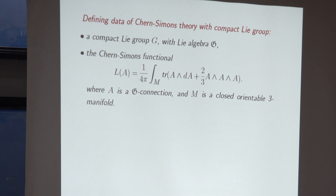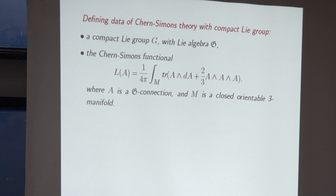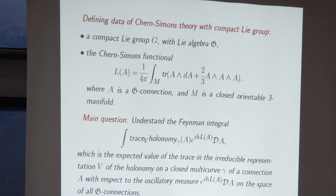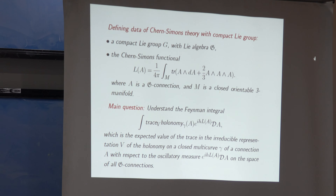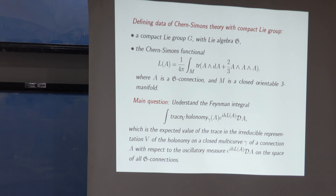To such a connection one associates a number called the Chern-Simons functional, evaluated by integrating a Lie-algebra-valued three-form on the manifold. You take the trace of the matrix-valued one-form, integrate it, and get a number. With this number you define an oscillatory integral and use the Chern-Simons functional as the action for a physical system, writing the principle of minimal action in a quantum setting - constructing what is called a Feynman integral.